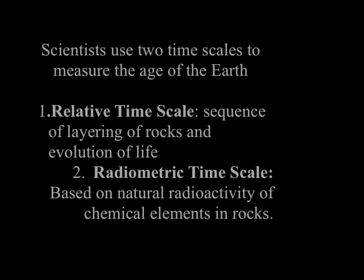Scientists use two timescales to measure the age of the Earth. The first is the relative timescale, which is the sequence of layering of rocks and evolution of life. The second is the radiometric timescale, which is based on natural radioactivity of chemical elements in rocks.